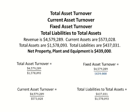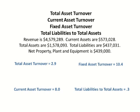Here are the answers. As you can see, these are not in percentages — they're whole numbers. Total asset turnover is 2.9. Fixed asset turnover is 10.4. Current asset turnover is 8. And total liabilities to total assets is 0.3.